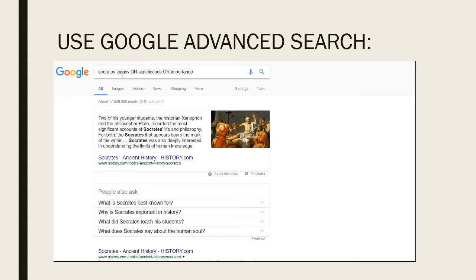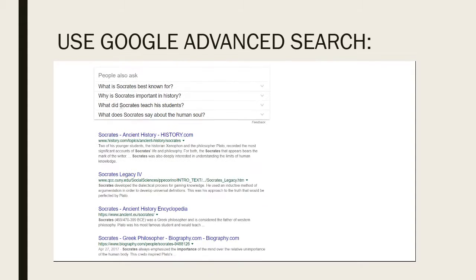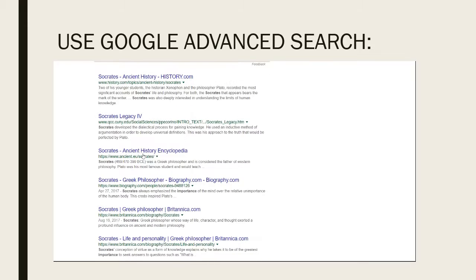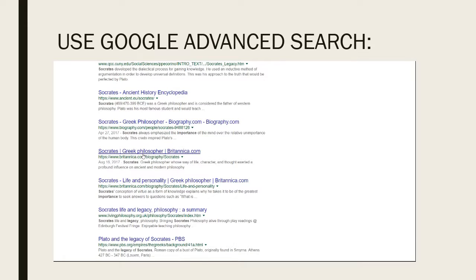Up here it actually shows you — these are called Boolean — how you would do the search. It's a really good way to learn how Google thinks. All these pages will have Socrates and will have something to do with his significance, his legacy, or his importance.